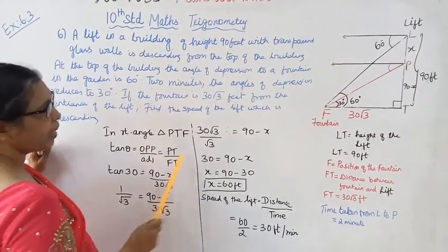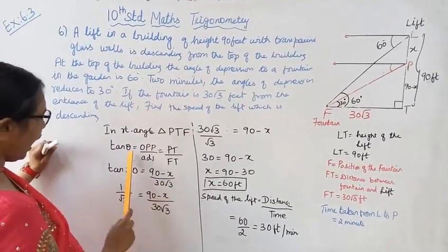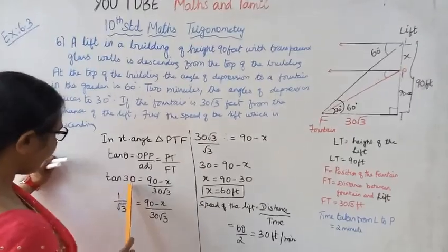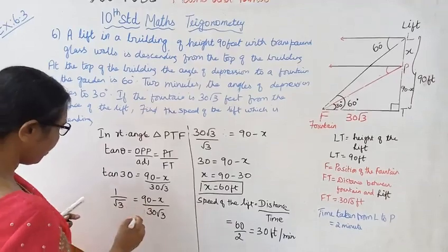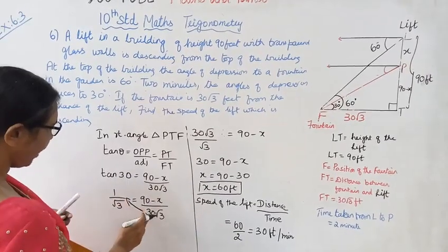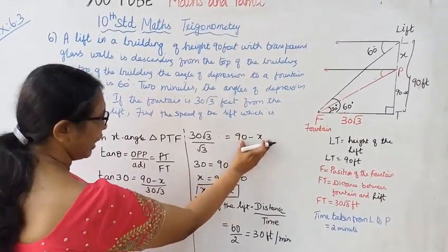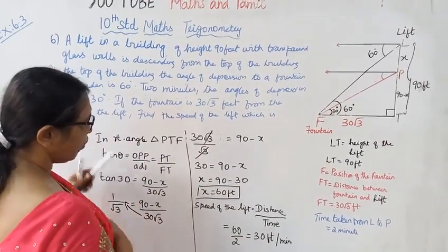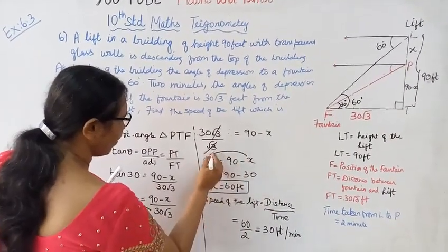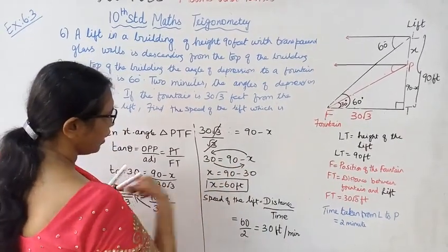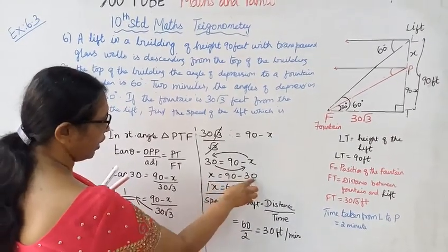PT over FT - PT is the opposite side which is 90 minus X, FT is 30 root 3. For the 30 degree angle, tan 30 equals 1 over root 3, so 90 minus X over 30 root 3. Cross multiply: 30 root 3 over root 3 equals 90 minus X. Root 3 cancels, giving 30 equals 90 minus X. Therefore X equals 90 minus 30, X equals 60 feet.